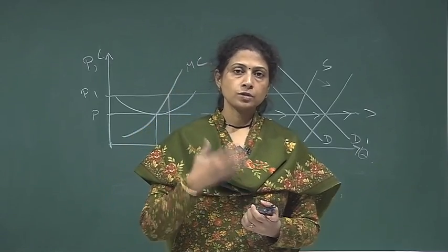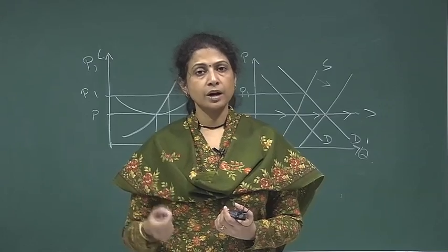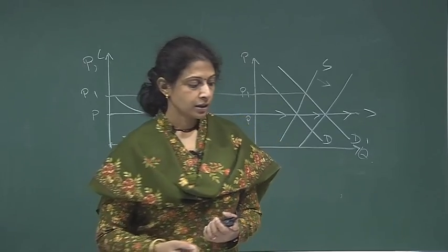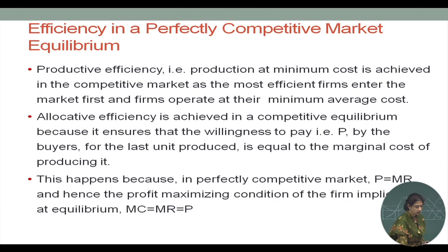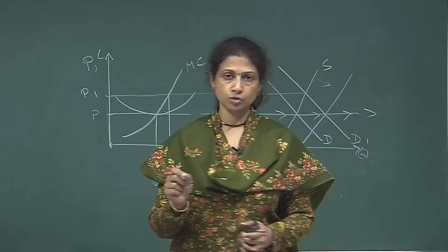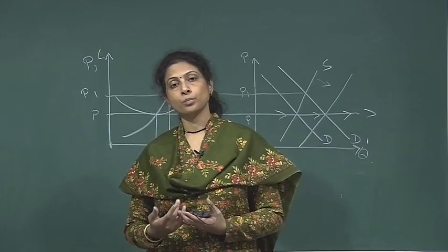The cost of supply of the product is equal to the willingness to pay for the product. The cost of supplying the last unit — the marginal cost — is equal to the willingness to pay for that last unit, which is equal to price. This ensures that allocative efficiency is achieved. This happens because in a perfectly competitive market price equals marginal revenue, and hence the profit maximizing condition implies that at equilibrium marginal cost equals marginal revenue equals price. The cost and benefit of the last unit of output are equal in a perfectly competitive market, and that ensures the equilibrium is efficient.